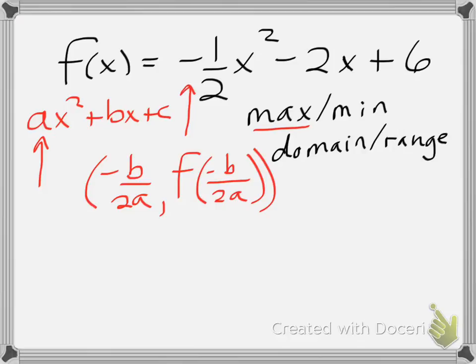So we'll take, in this case, our a and b values. Our b value is going to be here, negative 2. Our a value, as we said, is a negative one half. So when I do the math, if a is negative one half, b is negative 2...